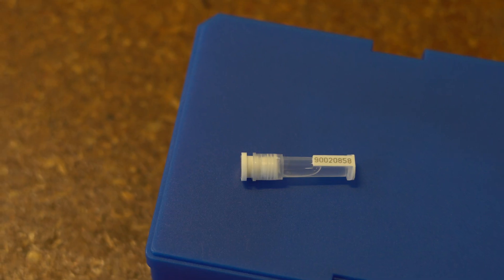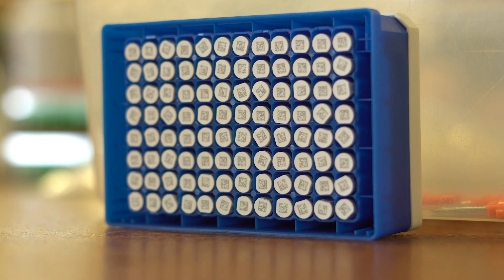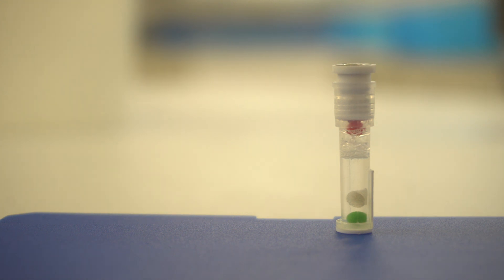Each vial has an 8 digit numerical code on the side and a matching 2D barcode on the bottom. A green ball indicates a sample has been taken properly. The vials are filled with a saline buffer which preserves the integrity of the sample and simplifies shipping protocols.